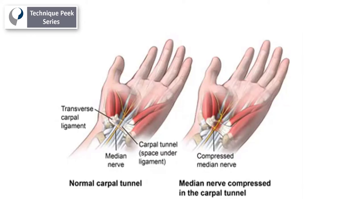Carpal tunnel syndrome is an issue with compression of the median nerve at the level of the wrist, where many flexor tendons also pass through.